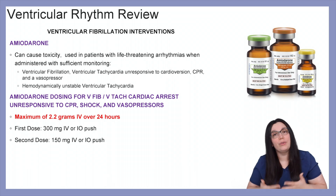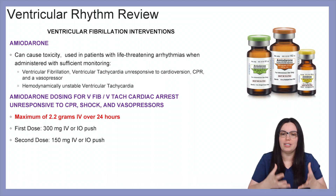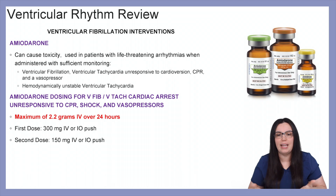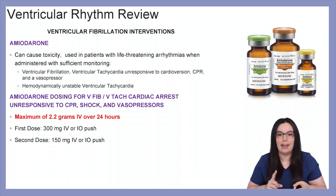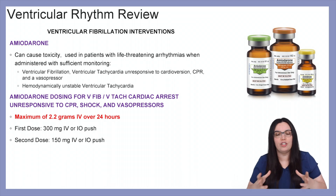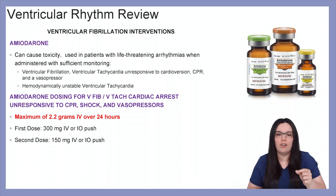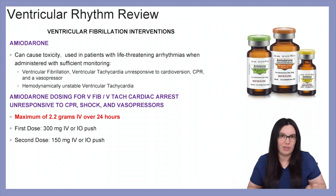Amiodarone can cause toxicity, so it's really only used in patients with life-threatening arrhythmias and must be administered with sufficient monitoring. We give this to ventricular fibrillation and ventricular tachycardia patients unresponsive to cardioversion, CPR, and vasopressors, as well as hemodynamically unstable ventricular tachycardias. Dosing for cardiac arrest patients: a maximum of no more than 2.2 grams IV over 24 hours. The first dose is 300 milligrams IV or IO push, and the second dose if needed is 150 milligrams IV or IO push. Once you've given the first and second dose, amiodarone is no longer a consideration.